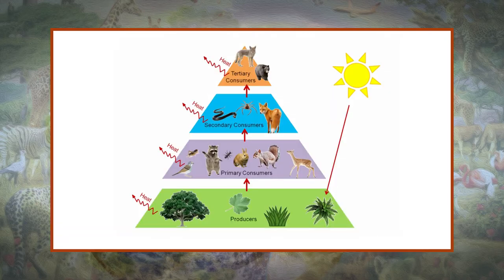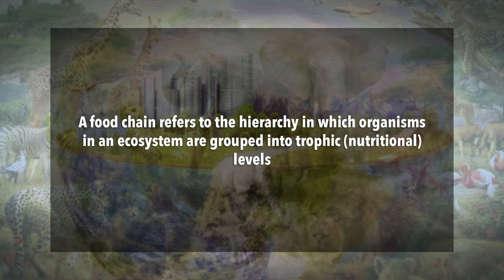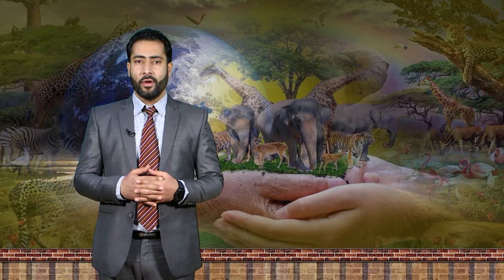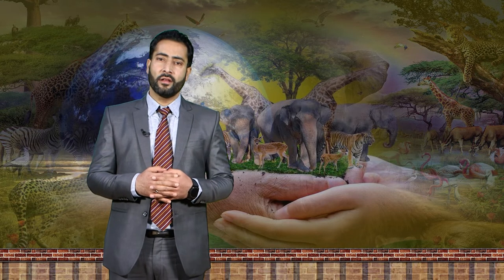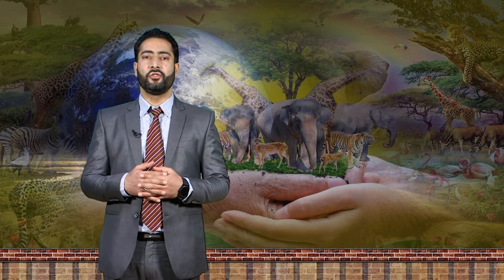The trophic levels are shown in a series or succession to represent the flow of food energy and the feeding relationships between them. The trophic group is comprised of organisms that feed on the primary producers to obtain nutrition, and the succeeding groups are each comprised of organisms that feed on the group before them. The succession of trophic levels may occur in a one-way chain or in more intricate trophic paths called a food web. A food chain refers to the hierarchy in which organisms in an ecosystem are grouped into trophic or nutritional levels, while a food web is comprised of many food chains linked together.